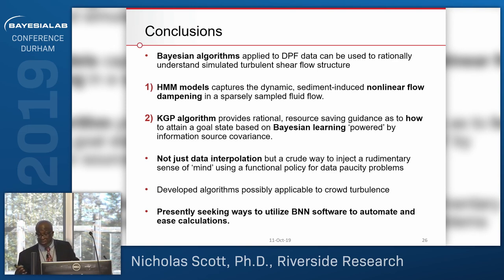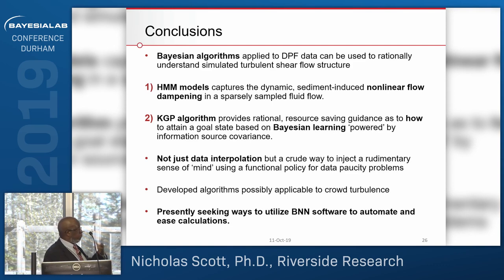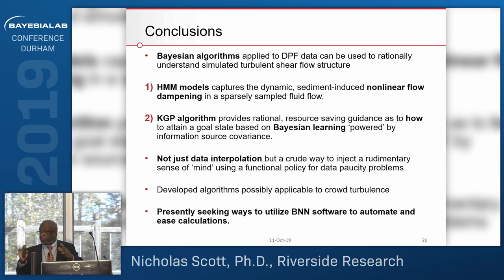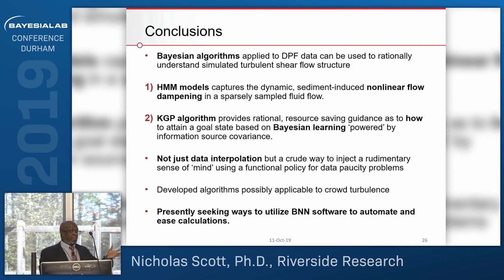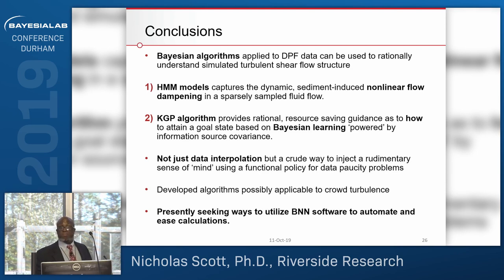This is not just data interpolation — we're injecting a sort of mind into the problem to obtain a goal state, guided by a principle. Functional policies can act as a crude form of mind. We've developed algorithms possibly applicable to crowd turbulence — fluid turbulence is not crowd turbulence, but the tools may be applicable. Presently we're seeking ways to utilize BBN software like Bayes Lab to automate and ease calculations, moving from a mathematical model toward a more automated system for analysts working in the field.